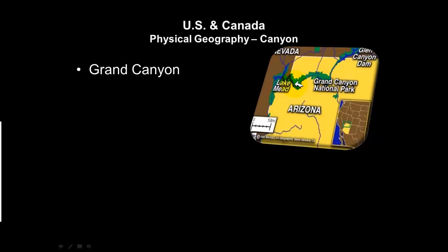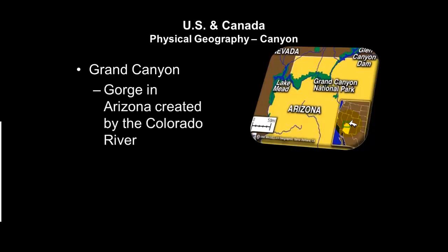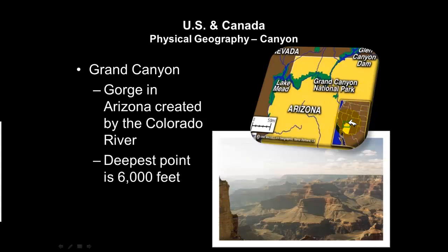The Grand Canyon is located in Arizona, on the border of Arizona, Utah, and a bit of Nevada. It is technically a gorge created by the Colorado River. Looking at the illustration, all of what you see is the Grand Canyon. The deepest point is 6,000 feet — over millions of years the Colorado River has eroded and worn away the land to form this gorge reaching as deep as 6,000 feet.